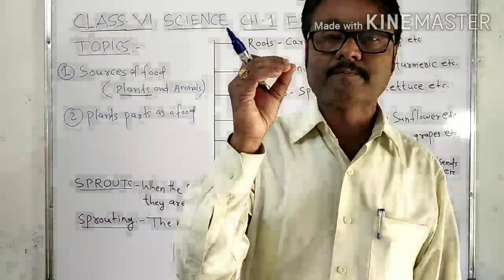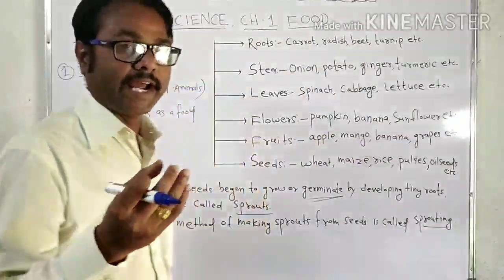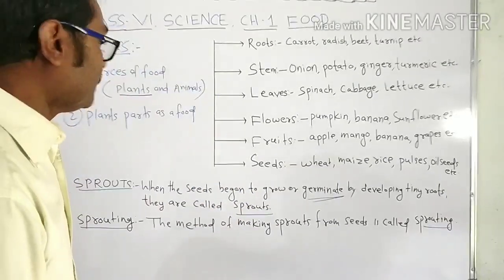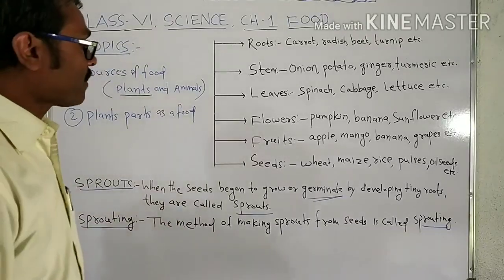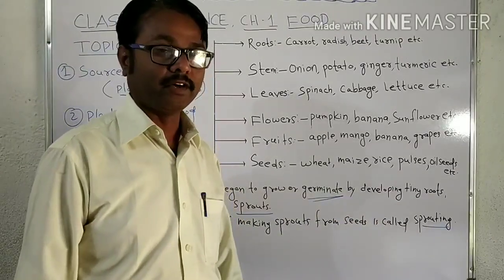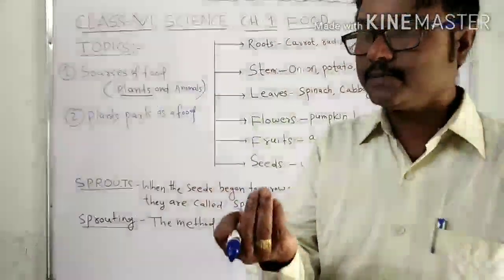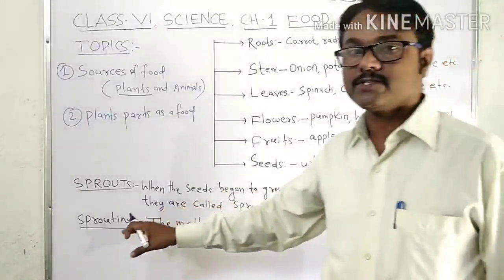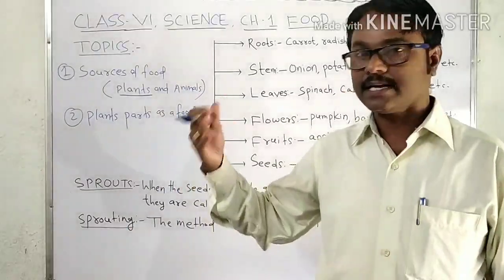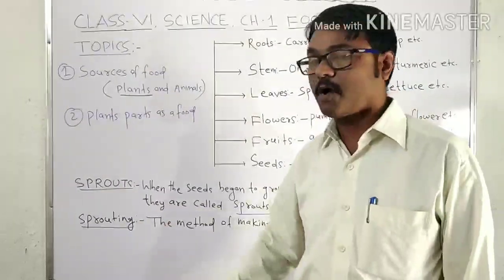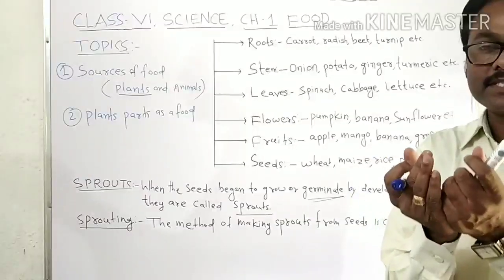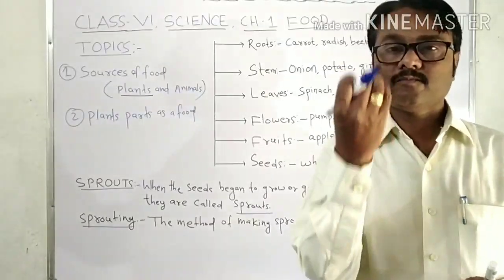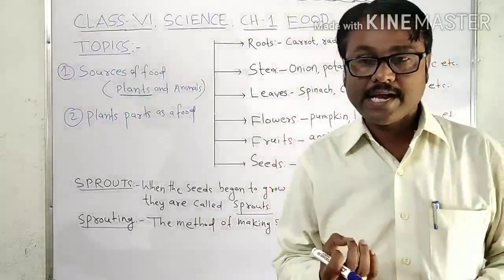When you soak seeds in water, after one night you will see small white things coming out — that is the sprout. The method of making sprouts from seeds is called 'sprouting.' If you soak seeds in water, after one day you will get sprouts. This sprouting process will be handled in more detail in higher classes.